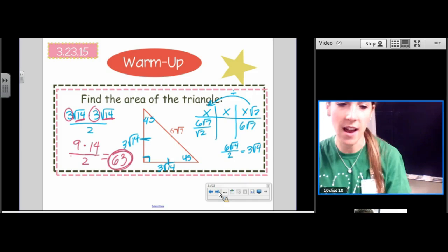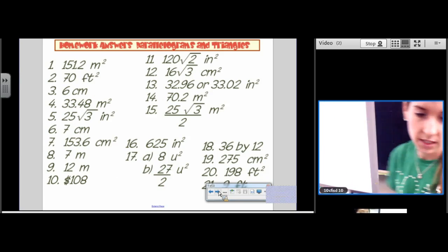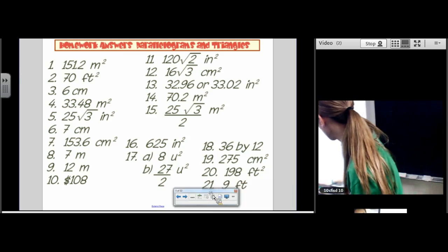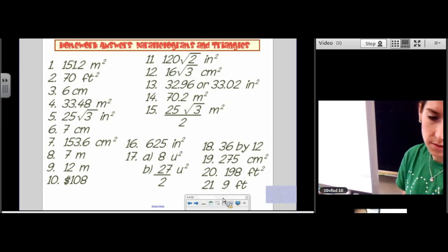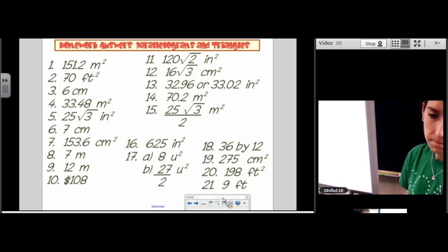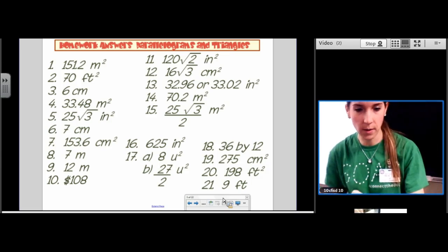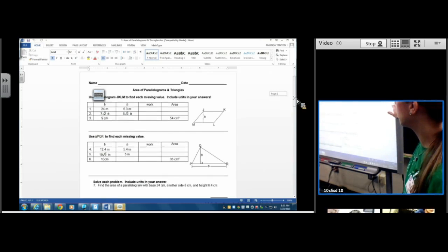And once again, 3 times 3 is 9, not 6. So this homework was called parallelograms and triangles. Let me know which ones you would like me to work. Okay, we're going to look at number 14 first.